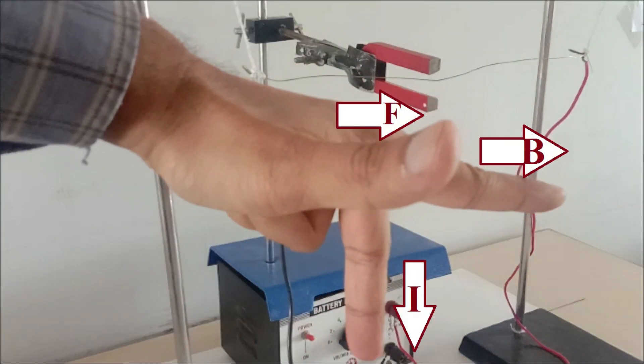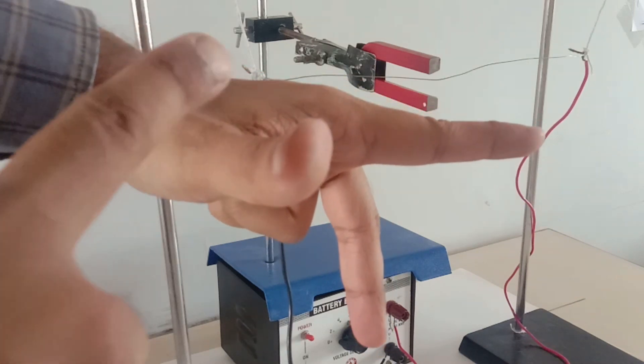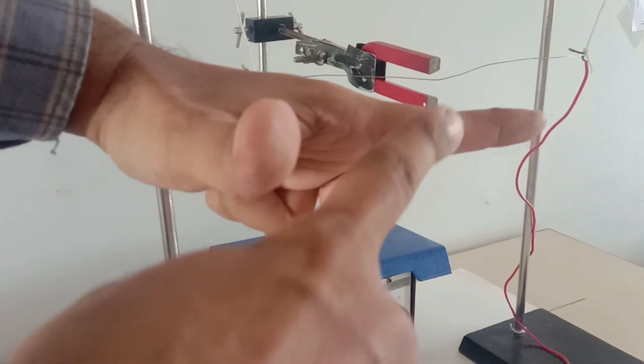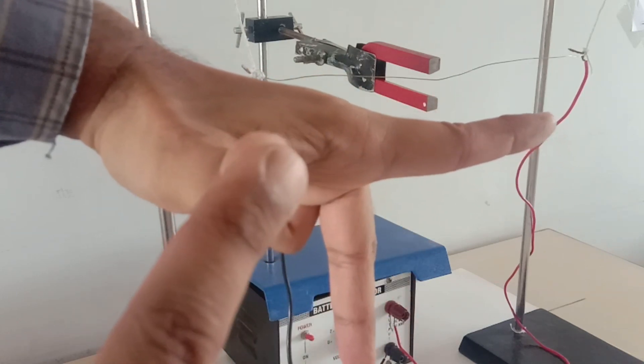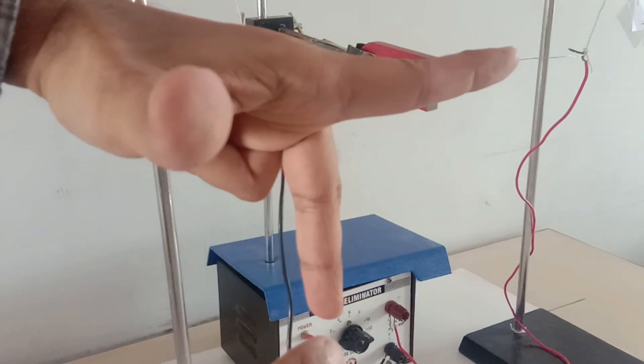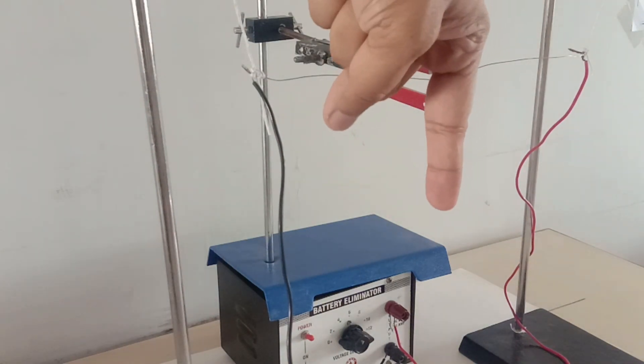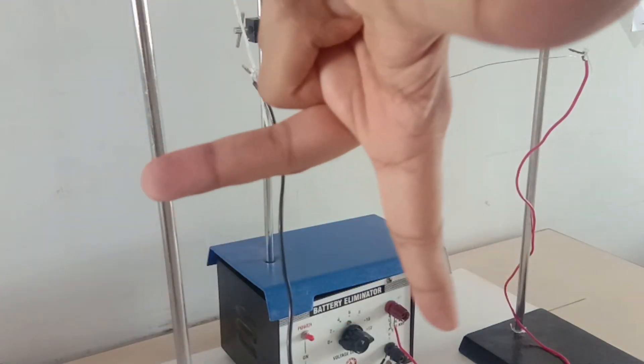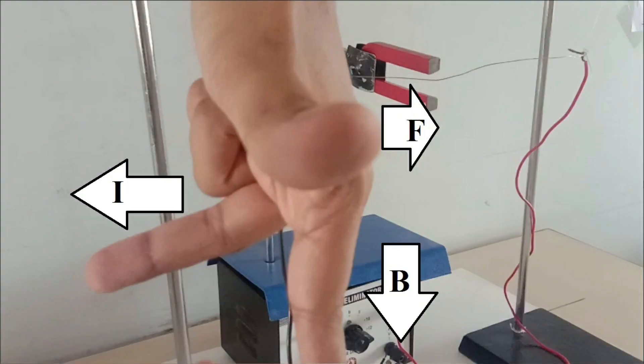This is the left hand thumb rule. The thumb and the other two fingers should be at an angle of 90 degrees from each other. We can remember this as FBI: F stands for force, B for magnetic field, I for current. Here magnetic field is downwards, current is in this direction, so the force is expected in the outward direction.